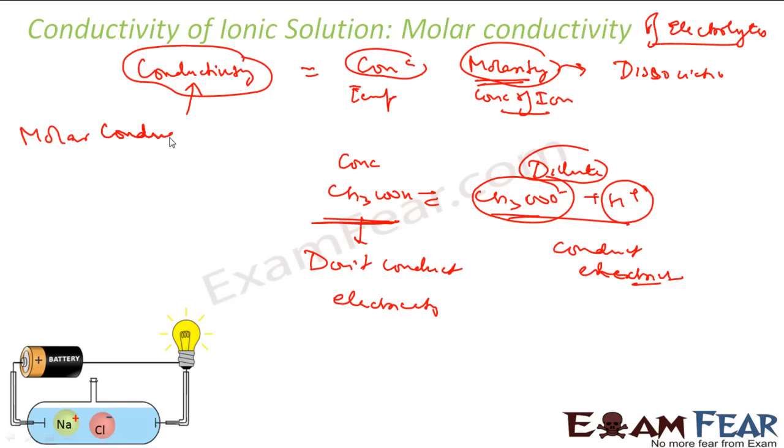Molar conductivity, denoted by lambda m, is nothing but conductivity divided by concentration. Lambda m = kappa/C, where C is in moles per meter cube - please note it is not in moles per liter, it is in moles per meter cube. Kappa is conductivity in siemens per meter. If you look at the units, lambda m will be in siemens meter square per mole.